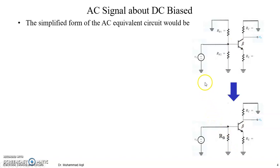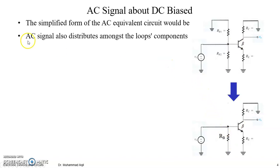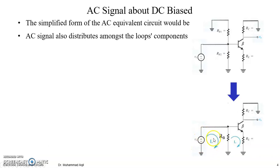So we can simplify the equivalent circuit. Now the AC signal is distributed amongst the loop components. We already know that if we have a single supply distributed among multiple loops, we can find the values of voltages and currents in those loops by using Kirchhoff's voltage and current laws.